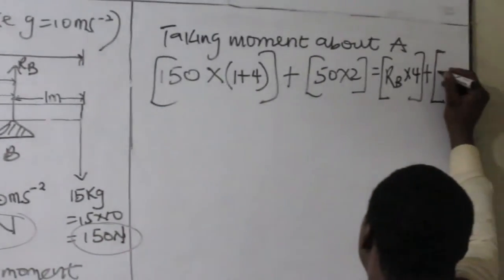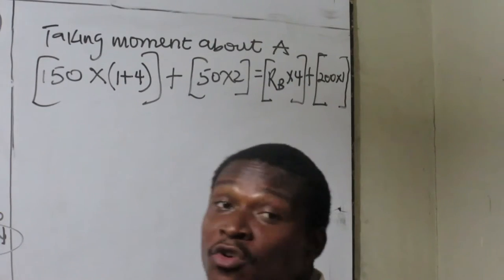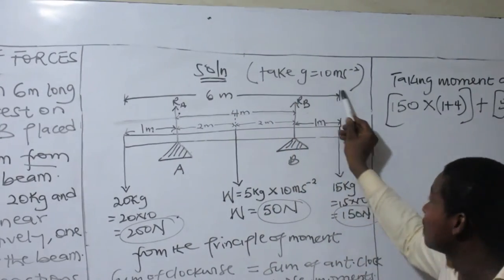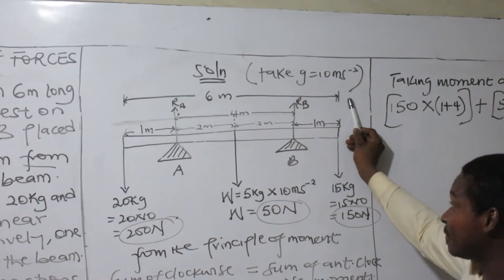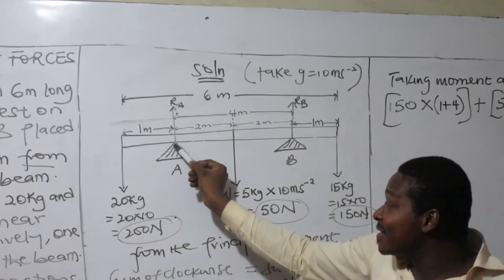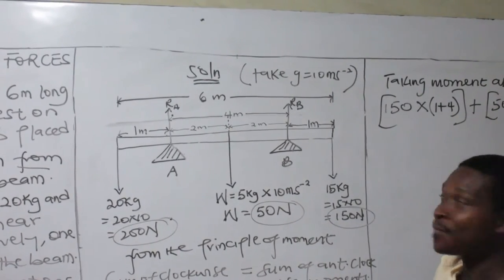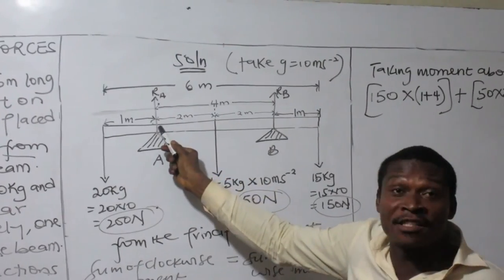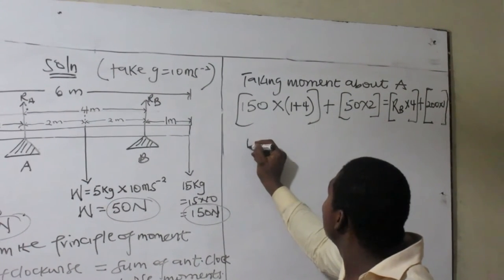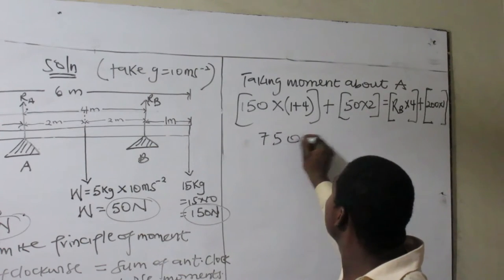That is why RA was not part of the clockwise direction. Now RB has a distance to the line of action, so RB times 4 is anti-clockwise. And there is a force of 200 N on the way, so that is 200 times 1. The most confusing part is here and will soon be rationalized. RA is in a clockwise direction — that is true — but its perpendicular distance to the line of action is zero because you are taking moments about the same point where RA stands.